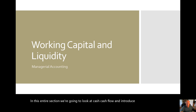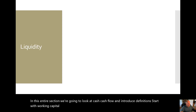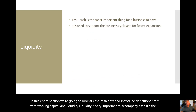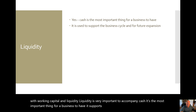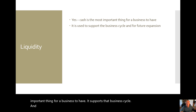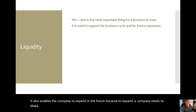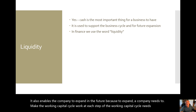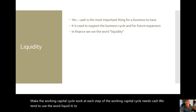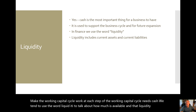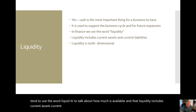We're going to start with working capital and liquidity. Liquidity is very important to a company. Cash is the most important thing for a business to have. It supports the business cycle and also enables the company to expand in the future, because to expand, a company needs to make the working capital cycle work. Each step of the working capital cycle needs cash. We tend to use the word liquidity to talk about how much is available, and that liquidity includes current assets and current liabilities. It's multi-dimensional.